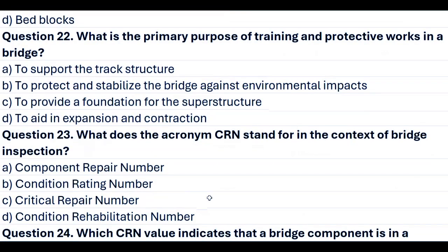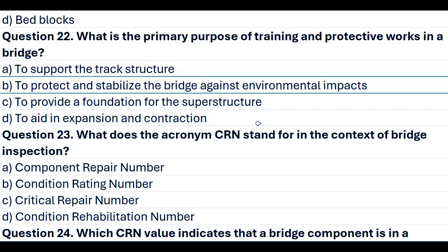Question 22. What is the primary purpose of training and protective works in a bridge? A. To support the track structure. B. To protect and stabilize the bridge against environmental impacts. C. To provide a foundation for the superstructure. D. To aid in expansion and contraction. Answer B. To protect and stabilize the bridge against environmental impacts.